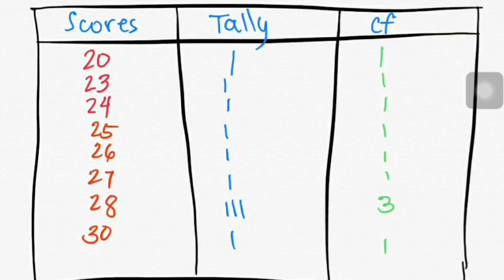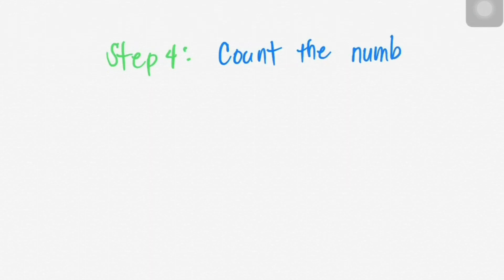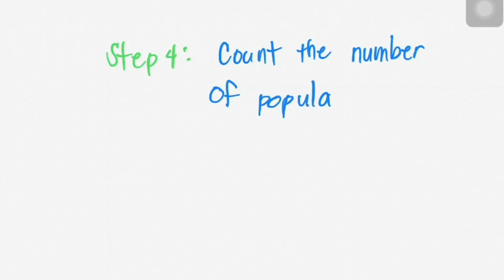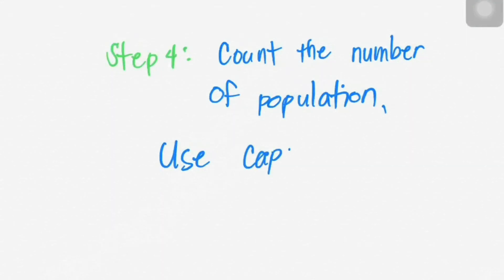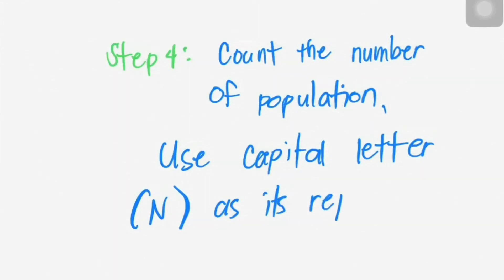In the frequency distribution column, we will count the scores that you had tallied. Step 4: Add the total number of population. Use N, or the capital letter N, as a representation of the population.